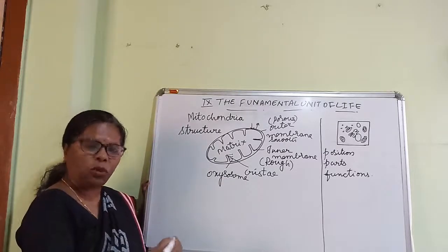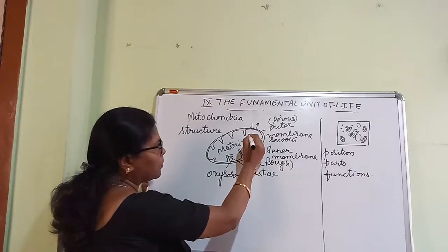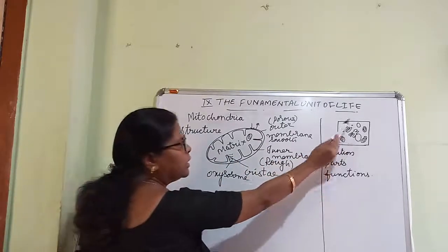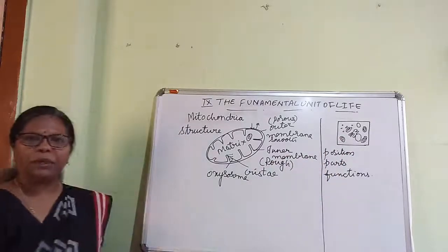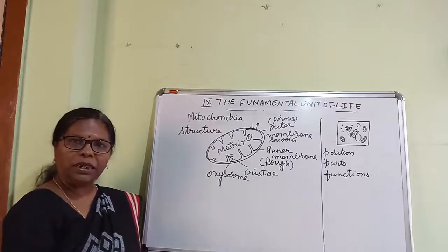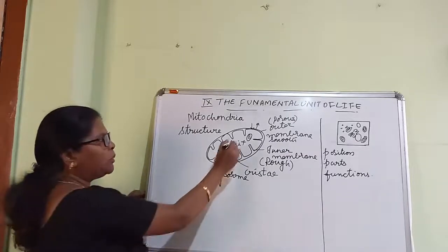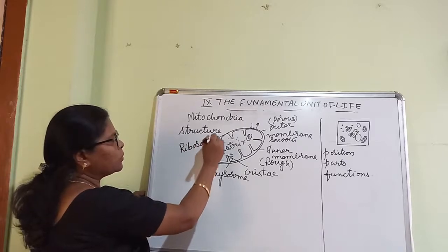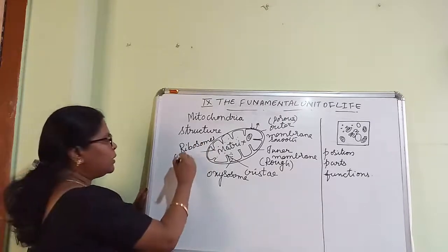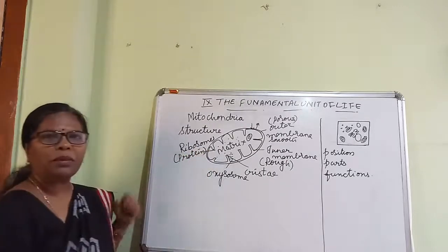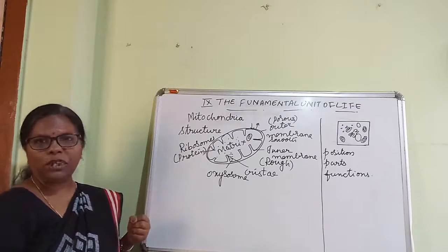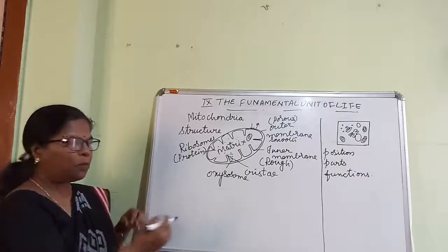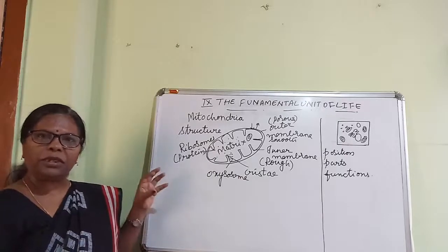Children, this mitochondria has its own DNA. Usually we find DNA in the nucleus — in the cell, DNA is present in the nucleus. But here, mitochondria itself has its own DNA. Apart from that, it is also having some ribosomes. Ribosomes are the site of protein molecules, which we have learned about when we studied the endoplasmic reticulum. So it has its own DNA, some protein material inside its structure, and it has cristae.